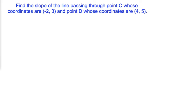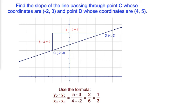Problem number 2: Find the slope of a line passing through point C, whose coordinates are (2, 3), and point D, whose coordinates are (4, 5). Solution: We will use the slope formula. The difference of the y-coordinates of points D and C is equal to 2. The difference of the x-coordinates of points D and C is equal to 6. After reducing 2 over 6 to the lowest terms, the slope of a line passing through points C and D is 1/3.